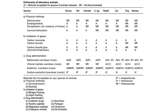The specific euthanasia methods outlined in the guidelines vary with species — mouse, rat, hamster, guinea pig, rabbit, cat, dog and monkey — and fall into three categories: physical methods, inhalation of gases, and drug administration. Under physical methods, electrocution is not recommended in any case. Exsanguination can be carried out for mouse, rat, hamster, guinea pig, rabbit and cat, but is not recommended for dog and monkey.